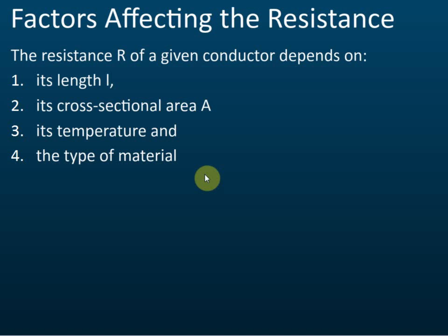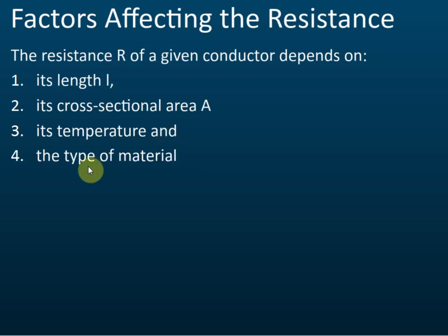Factors affecting resistance. Now let's see the factors that affect the resistance of conductors — what makes the resistance higher and what makes it lower. There are four factors that affect the resistance of conductors: the first is length, the second is cross-sectional area, the third is temperature, and the last is the type of material. We are going to discuss these one by one.